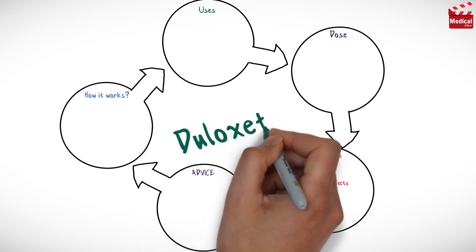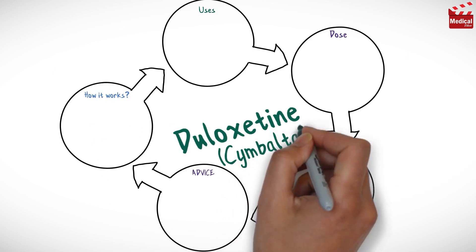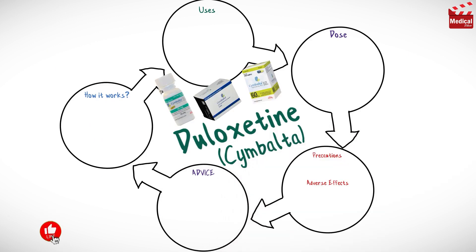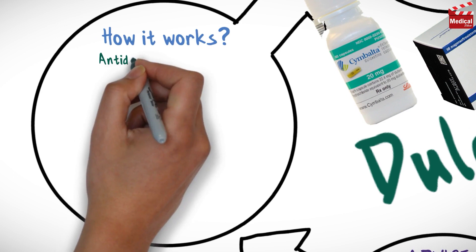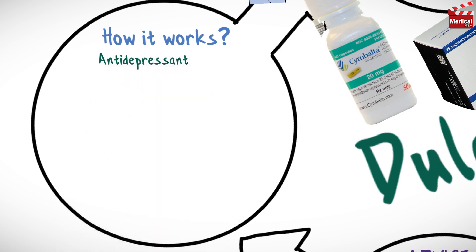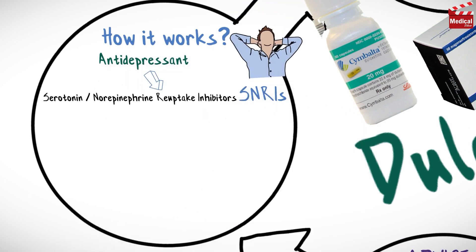In this video we'll briefly discuss what duloxetine is, how it works, what it's used for, the dose and side effects, contraindications and precautions. Duloxetine is an antidepressant that belongs to a category of drugs called serotonin and norepinephrine reuptake inhibitors.